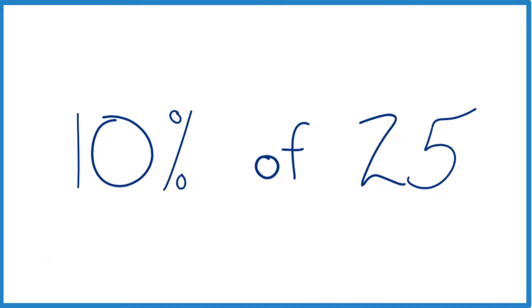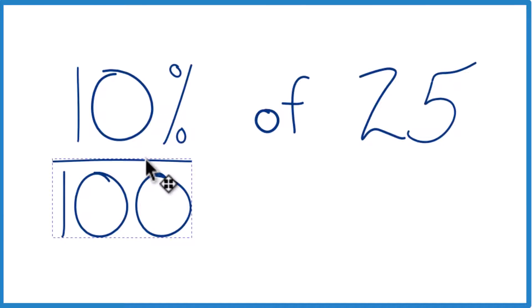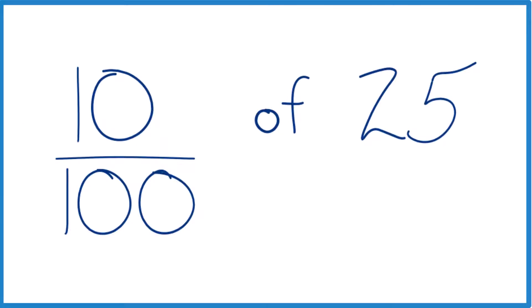So we could just take 10 divided by 100. That's going to give us a decimal. 10 divided by 100, that's 0.1.